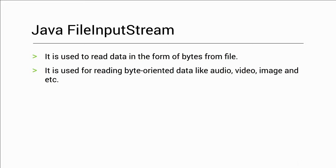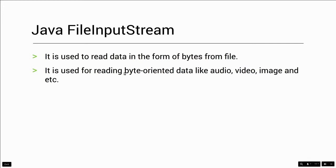So now we have data — raw data. Raw data means string file, characters and words. We can convert bytes, but audio, video, and image are also things you can represent as bytes.